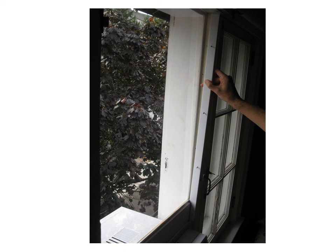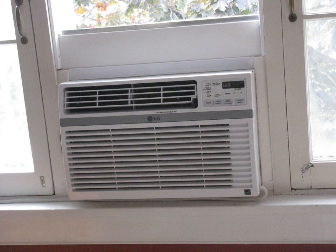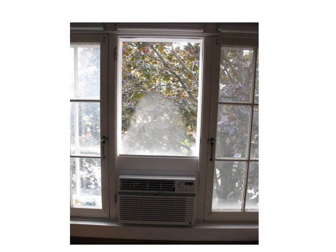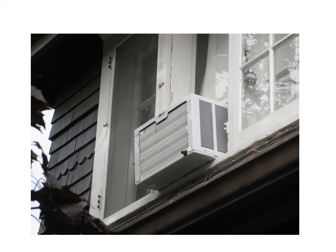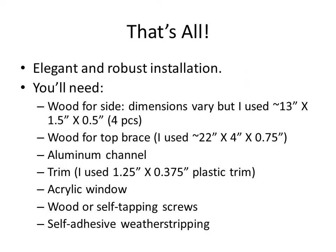We put trim on the other side as well and complete the job by putting trim around the window at the very top, in each case held in with small screws. The resulting installation looks neat and quite tight — there is very little air leaking around the air conditioner. There are also views from the outside, and notice you can do this installation without a ladder — entirely from inside. Here is a list of the items needed to complete this job. Good luck.